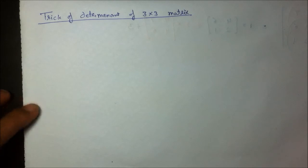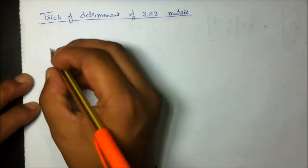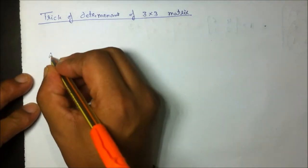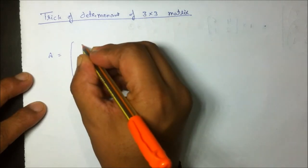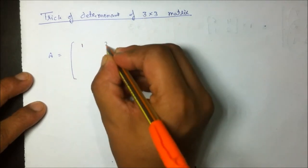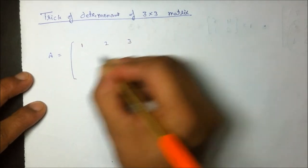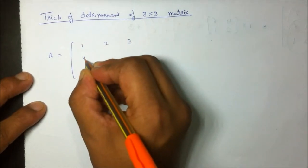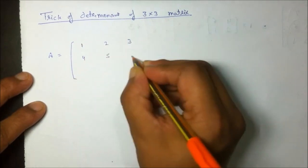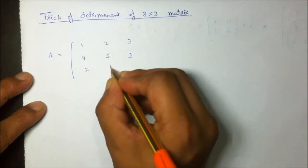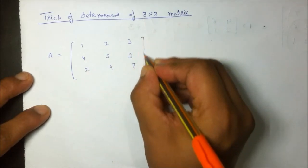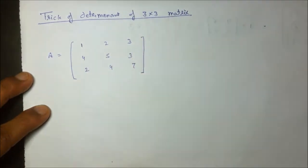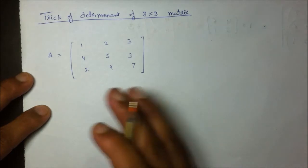Here is the trick to find the determinant of a 3×3 matrix. For example, I have a matrix A which is equal to [1, 2, 3; 4, 5, 3; 2, 4, 7] — these are random numbers I am noting down as an example.